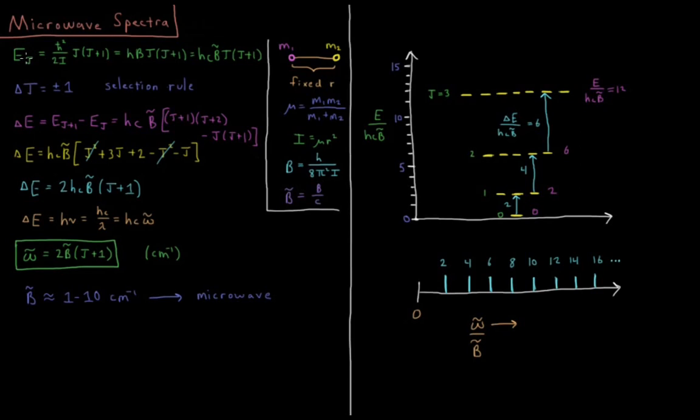From the previous video, we saw that our rigid rotor energy levels depend on a quantum number j. You might also see it as l, I'm going to use j mostly in this chapter. E sub j equals h bar squared over 2 times the moment of inertia times j times j plus 1. This equals h times b times j times j plus 1 in terms of the rotational constant. Also equals hc times b bar times j times j plus 1, the rotational constant in wavenumbers. Those are our energy levels. We have them plotted over there. E over hc b bar going up quadratically as we go from j equals 0 to 1 to 2 to 3.